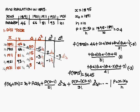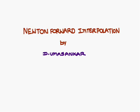In Newton forward interpolation, observe that the values substituted in the formula follow a diagonal line in the difference table: y0, delta y0, delta² y0, delta³ y0, and delta⁴ y0. These are the only values you need to substitute into the formula.